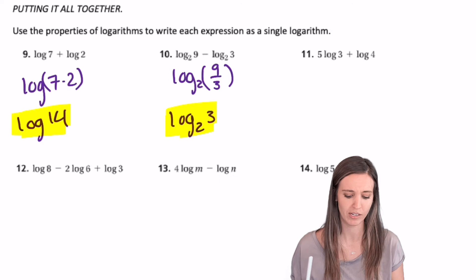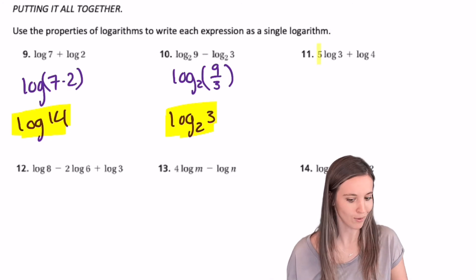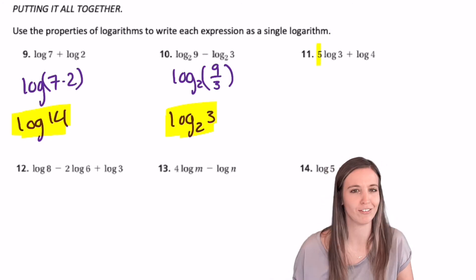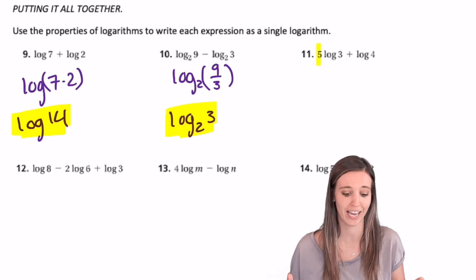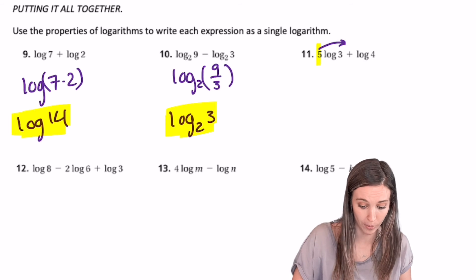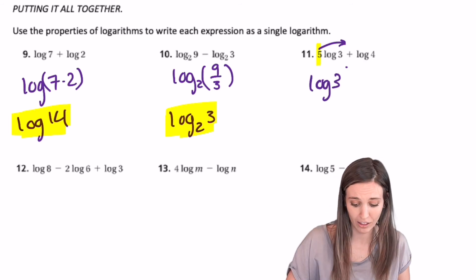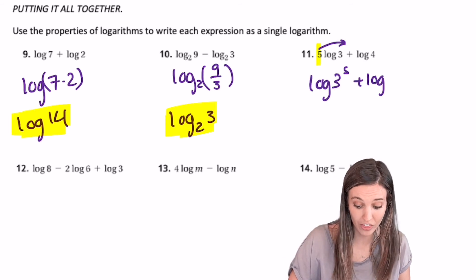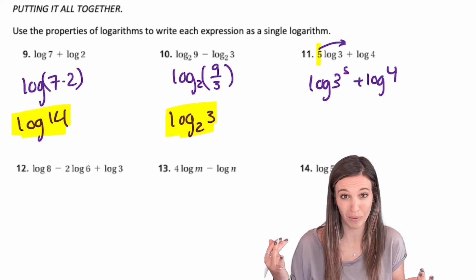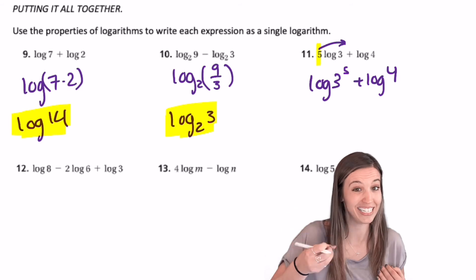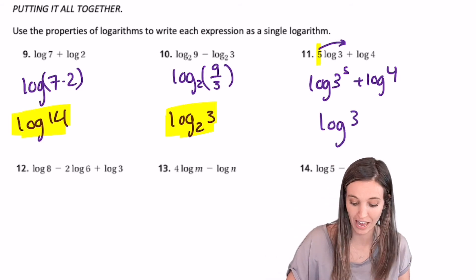In number 11, you see what's going on there? We have this 5 in front of that log 3. So we can't use product property or quotient property until we take care of that using power property. I'm going to bring that 5 up and get log of 3 to the 5th plus log of 4. Well, 3 to the 5th, I don't know in my head, so I'm going to leave it. I have addition here, so I can use product property to bring those two things together. Log of 3 to the 5th times 4.